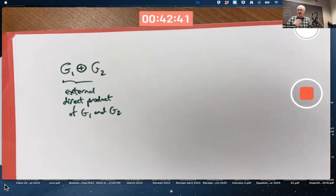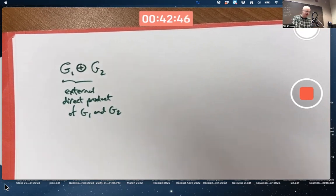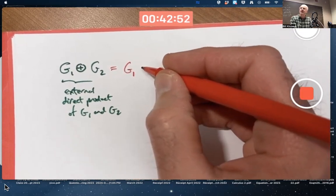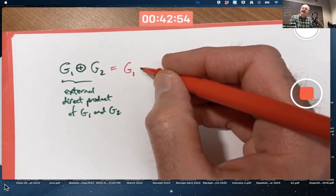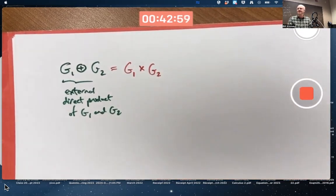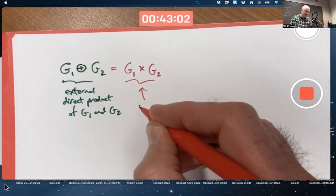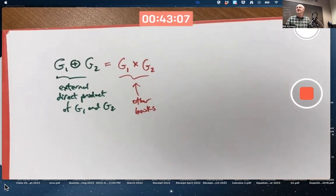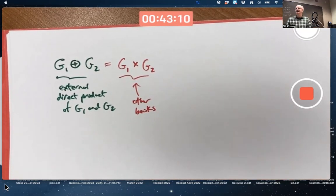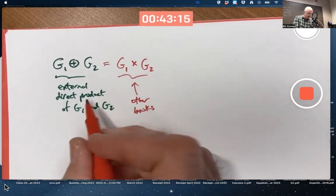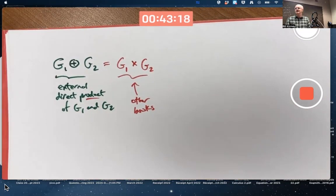Other books, instead of putting a plus sign with a circle around it, funnily enough, they use a times symbol across. Not every other book, but some other books use that notation for the exact same thing. Yeah, it is kind of funny that our book still calls this a product, but uses a plus sign with a circle around it.